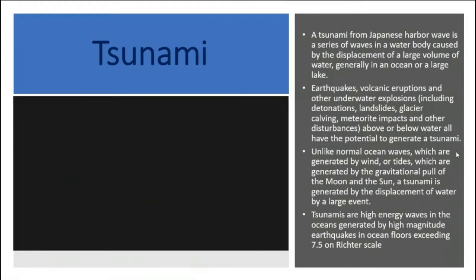Tsunami waves are created as a result of earthquakes, since most tsunamis are generated by seismic events. These waves are also called high-energy tidal waves. Tsunamis occur because of various reasons: earthquakes are the prime cause, followed by volcanic eruptions, marine landslides, glacier calving, meteorite impacts, or even missile testing in the oceans.